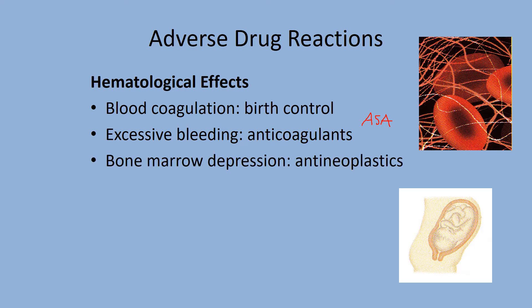Bone marrow depression: within your red bone marrow are blood stem cells that produce all lineages of blood cells — white blood cells, red blood cells, and platelets. Antineoplastic agents are cancer medications that prevent new formation. They suppress not only cancers but also bone marrow, leading to anemia.